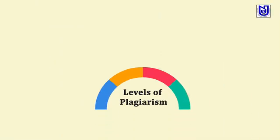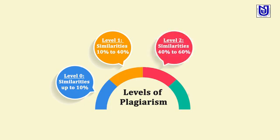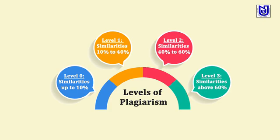Now let us see the levels of plagiarism. Regulation 2018 includes four levels. Level 0 means similarities up to 10%. Level 1 means similarities from 10% to 40%. Level 2 means similarities from 40% to 60%, and Level 3 means similarities above 60%. These four levels have been identified by Regulation 2018, and penalties may be imposed based on the level of plagiarism, whether it is a thesis, dissertation or a research publication.